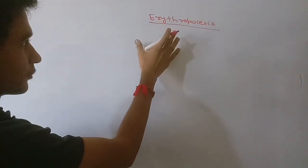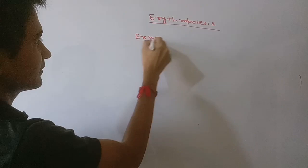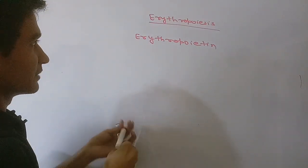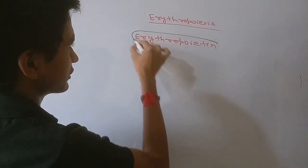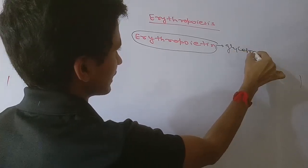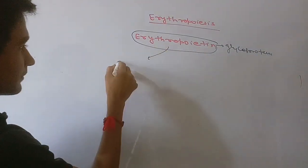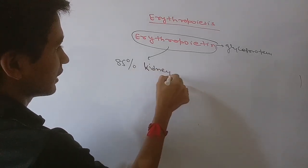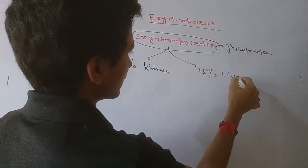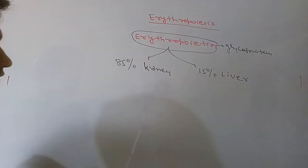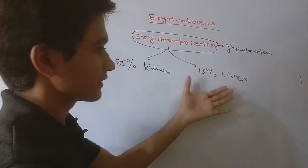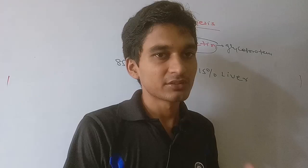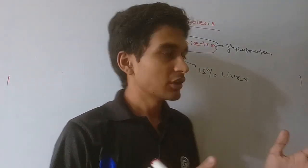The mechanism of erythropoiesis regulation is based on the hormone erythropoietin, which is a glycoprotein hormone. 85% of this hormone is synthesized in the kidney and the remaining 15% comes from the liver. If the kidneys are diseased and cannot produce their 85%, the remaining 15% from the liver can maintain only one-third the normal rate of erythropoiesis.